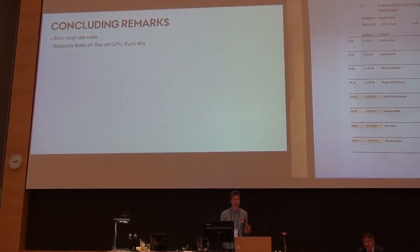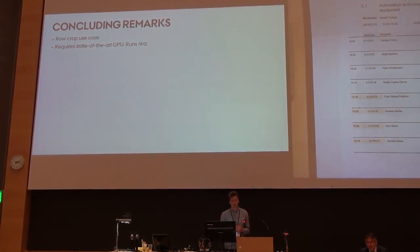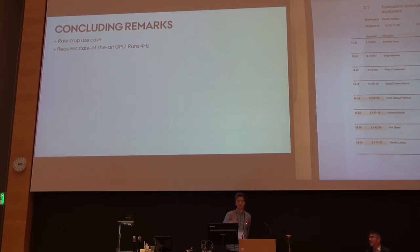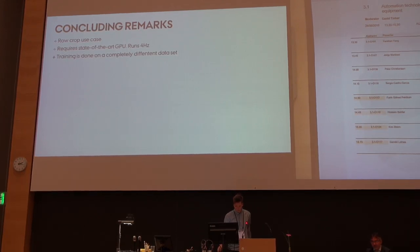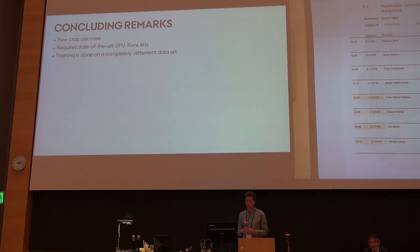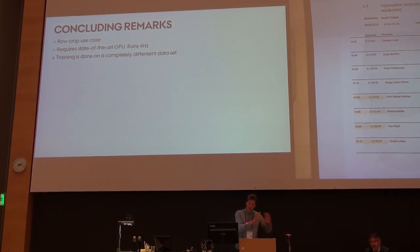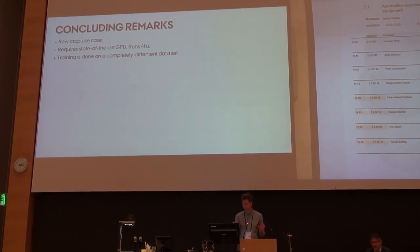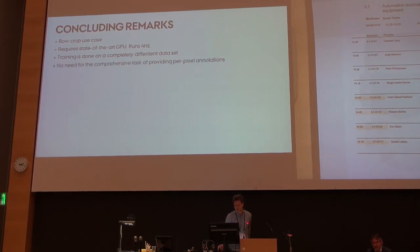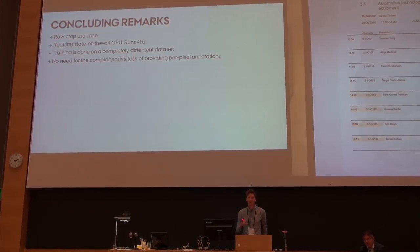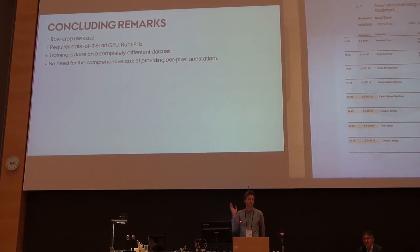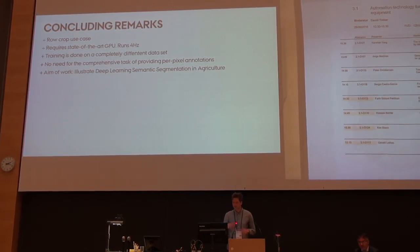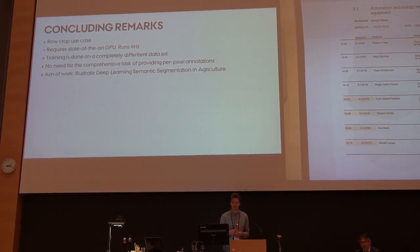In concluding remarks: the system breaks down for the road crop case. It requires a state-of-the-art GPU — the algorithm runs at four frames per second using a Titan X GPU, so it's not fully real-time, though you can use a smaller or compressed model for faster inference. The strong point of this method is that we take a model trained on a completely different dataset and apply it to agriculture — the two datasets are totally uncoupled — yet it still delivers impressive results. This also avoids the comprehensive task of doing per-pixel annotation on thousands of images.